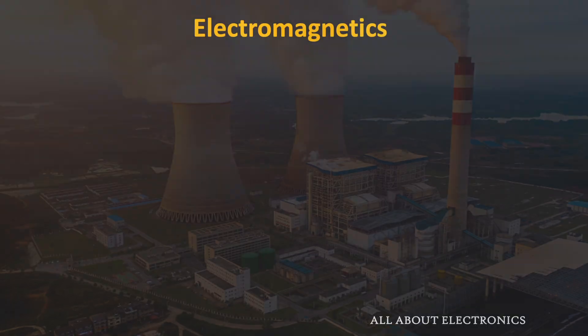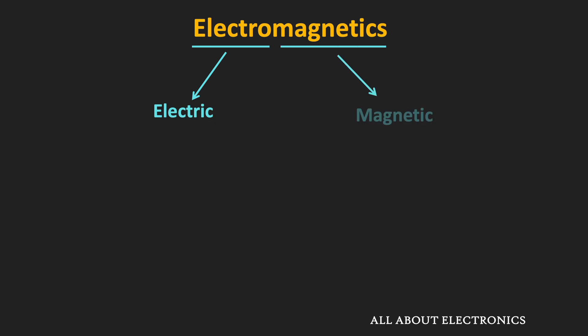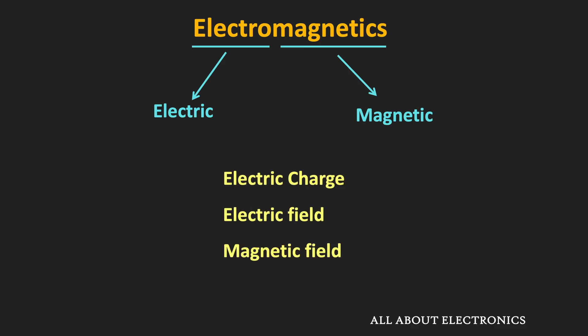If you see the term Electromagnetics, it is made up of two terms: electric and magnetic. Basically, Electromagnetics is a physical phenomenon which involves the electric charge, electric field, and the magnetic field, as well as the interaction between all of them.